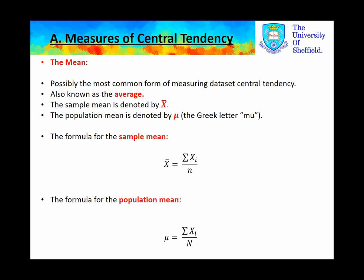The mean, which is possibly the most common form of measuring a data set's central tendency but not always the most appropriate, is also commonly known as the average. We denote the sample mean by the letter X with a bar across the top, and we call that X-bar. The population mean is denoted by the Greek letter mu. Below, we show the two different formulas based on whether we're looking for the sample mean or the population mean.